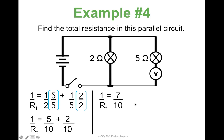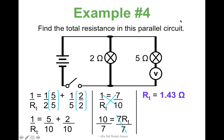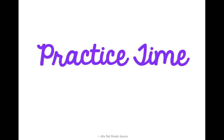Now I cross multiply: ten times one equals seven times R_total. To find just the total resistance, divide both sides by seven, and I get a total resistance of 1.43 ohms. It sounds really crazy — I promise it's not as bad as it looks. We're going to practice this so that you are a resistance-calculating champ.